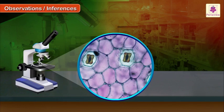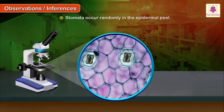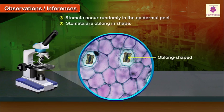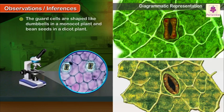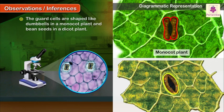Observations and Inferences: Stomata occur randomly in the epidermal peel. Stomata are oblong in shape. The guard cells are shaped like dumbbells in a monocot plant and bean seeds in a dicot plant.